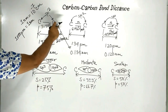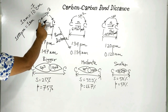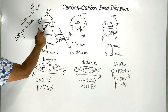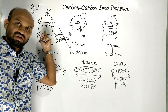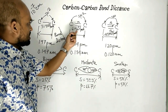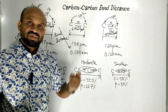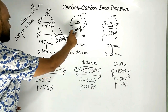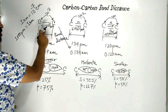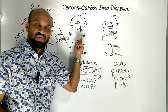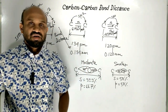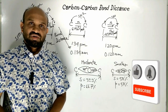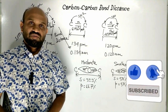To break the triple bond, higher energy is required. In the case of a carbon-carbon single bond, only one bond is present between two carbon atoms, so bond energy is the lowest — only 314 kilojoules per mole. In the case of a carbon-carbon double bond, two atoms are connected by two bonds, so moderate energy is required — greater than single bond and lower than triple bond. This covers carbon-carbon bond distance and bond energy.